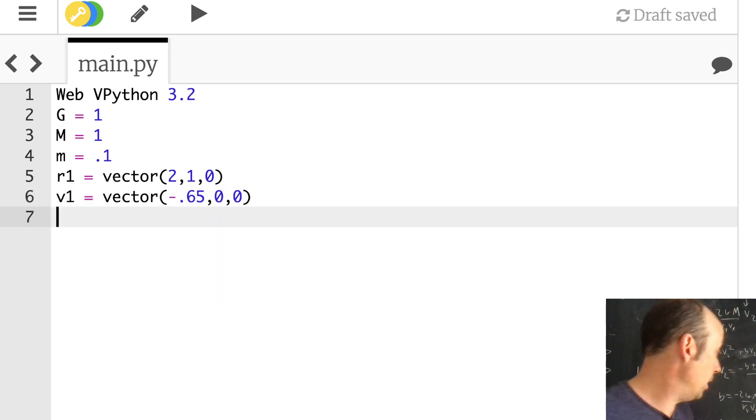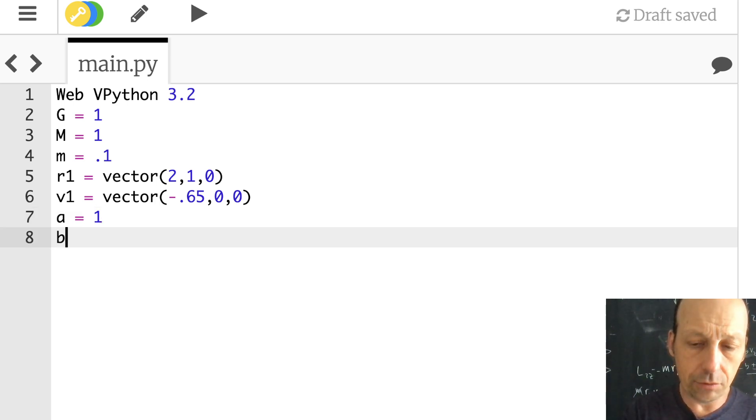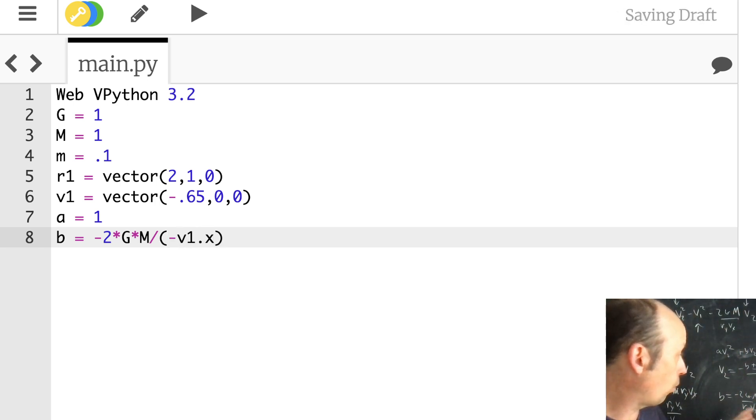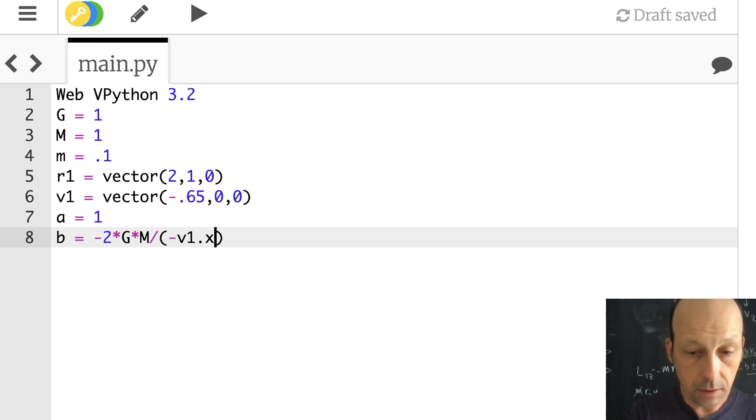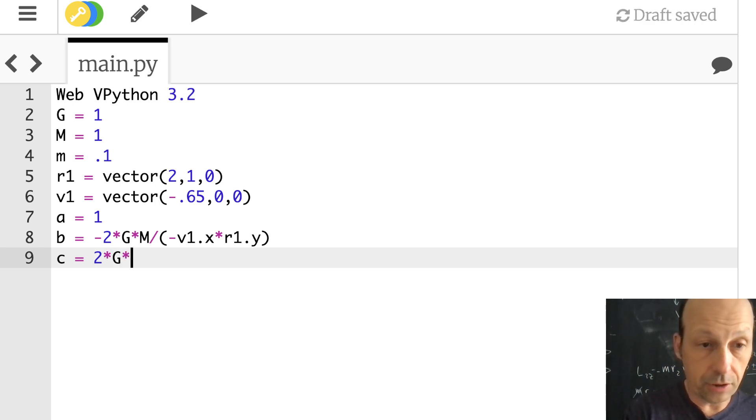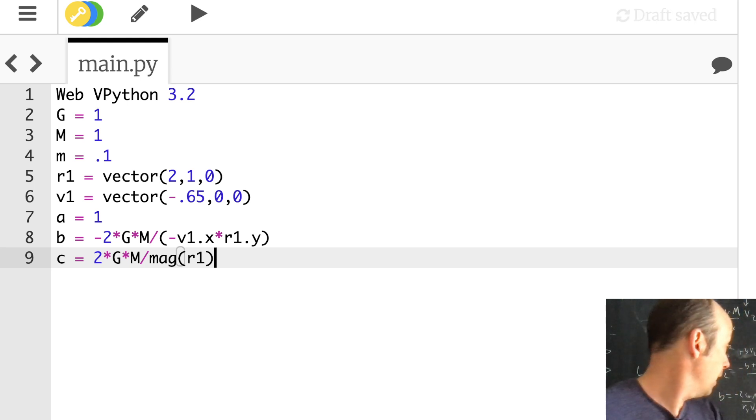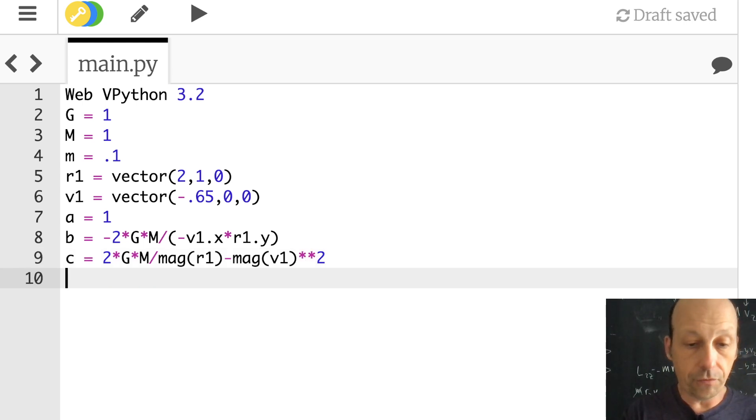So now I'm going to write down my A, B, and C. So A is 1. And you don't have to do it this way. I like to do it this way, though. B was -2 times G times M divided by V1.x times R1.y. Remember, I switched that. And then R_y. C is equal to 2 times G times M divided by R1, so this is the magnitude of R1, right? Because it's for potential energy. And then minus V1 squared, minus mag V1 squared again.